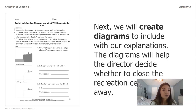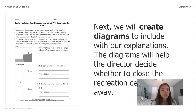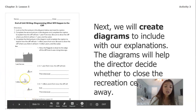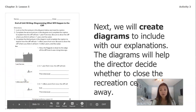The last direction says: complete the third picture in the diagram and complete the caption to explain how the cliff will look one million years from now. Be sure to draw the cliff where you think it will be in one million years and the water. In this bottom box you're going to be drawing a picture again, but this time it's focusing on one million years from now.